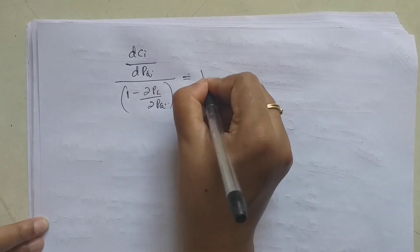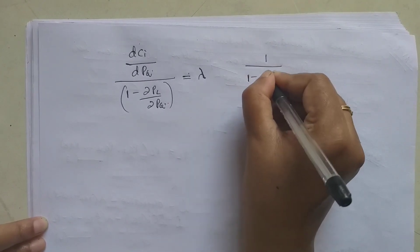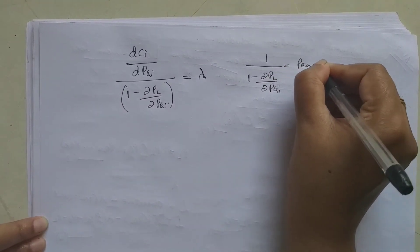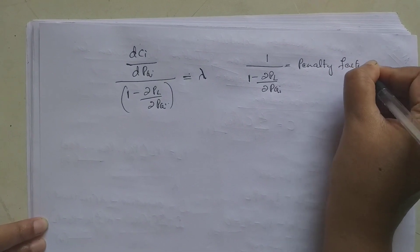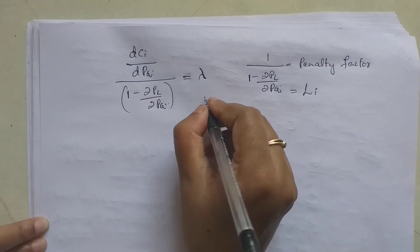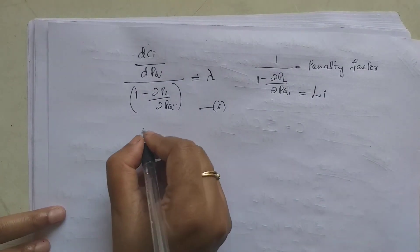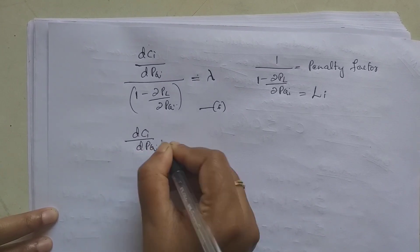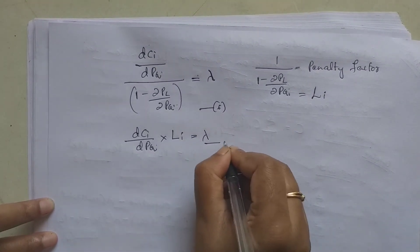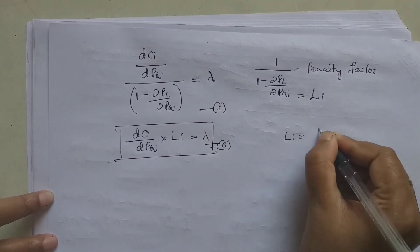Here, 1 divided by (1 minus partial differentiation of P_L with respect to P_Gi) is the penalty factor, represented by the symbol L_i. The equation becomes: (dC_i / dP_Gi) times L_i = lambda — this is equation 6. So L_i = 1 / (1 minus ∂P_L/∂P_Gi).